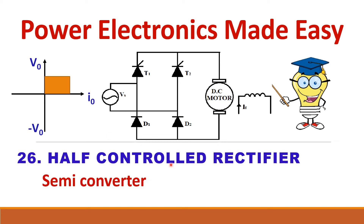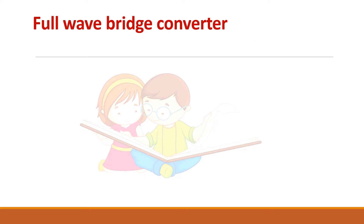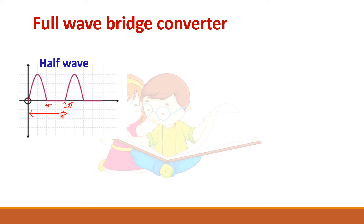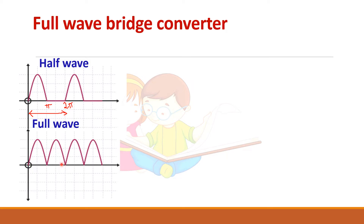Let us see about half control rectifier or semi converter. This is the diagram of a semi converter fed DC motor, which is widely used in industries. A full wave bridge converter gives full wave output - in one cycle of 2pi, if you get two waveforms it is called full wave. The converter which gives full wave output connected in a bridge fashion is called a full wave bridge converter.